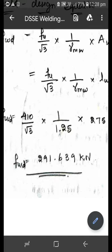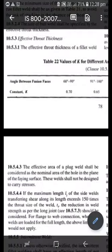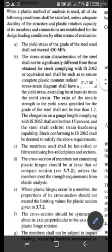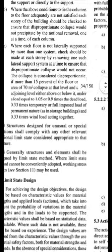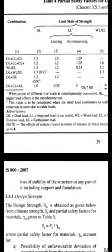Then γmw, γmw is the partial safety factor for the weld. That can be obtained from Table 5, page number 30 in IS 800. Let me go to that page.